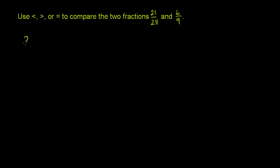So 21 over 28, if we want to put this in simplified form, 21 is the same thing as 3 times 7, 28 is the same thing as 4 times 7. They're both divisible by 7. Now if you divide the numerator and the denominator by 7, 3 times 7 divided by 7 is just going to be 3, 4 times 7 divided by 7 is just going to be 4. So this guy right here is 3/4, it's equivalent to 3/4.